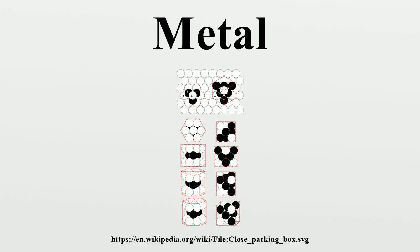Extraction: Metals are often extracted from the earth by means of mining ores that are rich sources of the requisite elements, such as bauxite. Ore is located by prospecting techniques, followed by the exploration and examination of deposits. Mineral sources are generally divided into surface mines, which are mined by excavation using heavy equipment, and subsurface mines. Once the ore is mined, the metals must be extracted, usually by chemical or electrolytic reduction.